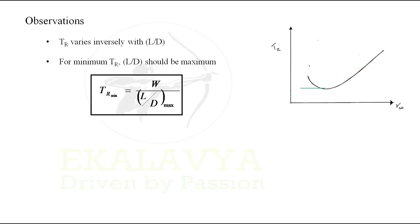By substituting L by D maximum in the thrust required equation, we get minimum thrust required. That is, minimum thrust required TR is obtained when aircraft is flying at L by D max.